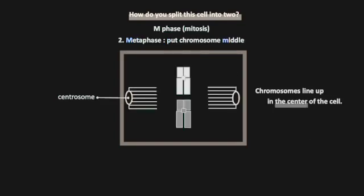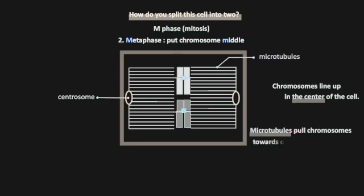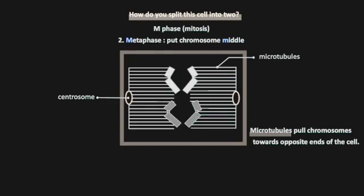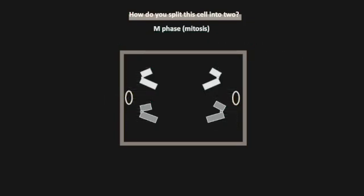Put chromosomes in the middle. Chromosomes are pulled towards opposite ends of the cell. They are apart from each other, moving towards the poles of the cell. We can get two identical daughter cells in telophase.